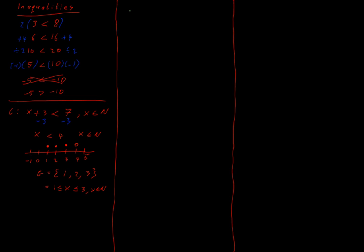Another example, just to give you a reminder on how the sets we can work with operate. If we had 3x is greater than or equal to minus 12, and x is an element of ℤ — the integers — that means all of the positive and negative whole numbers and 0. We need to know this without any further context. To solve, I divide both sides by 3, and since 3 is a positive number I can do that without any issue. So x is greater than or equal to minus 4.